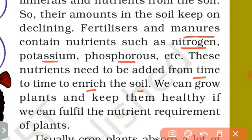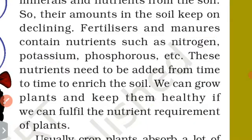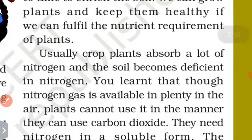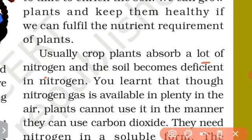These nutrients — potassium, phosphorus, and nitrogen — need to be added back to the soil. We can grow plants and keep them healthy if we fulfill the nutrient requirements of plants. Usually crop plants absorb a lot of nitrogen, and the soil becomes deficient in nitrogen.